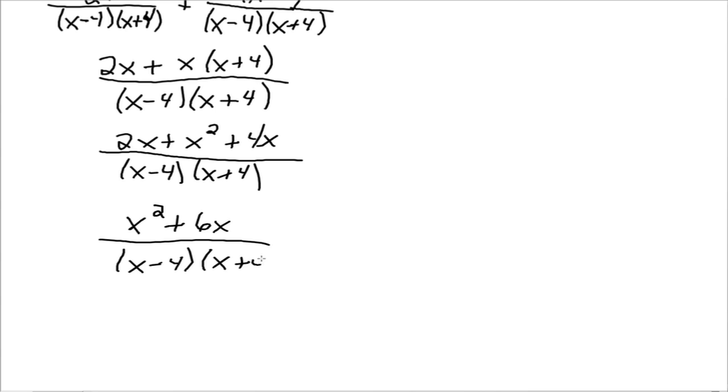And we can factor that numerator by taking an x out. x squared plus 6x, and that leaves behind that. And what we're looking for at this stage is to say, hey, are there any common factors? And there are no common factors to divide out of the top and the bottom. So, we are done.